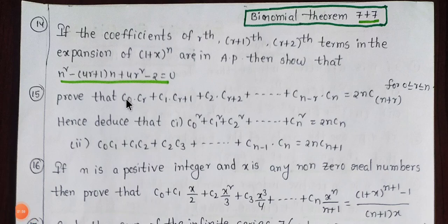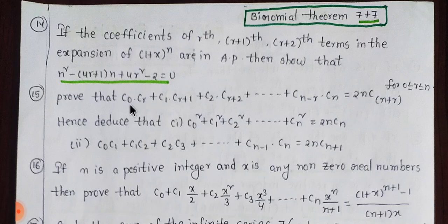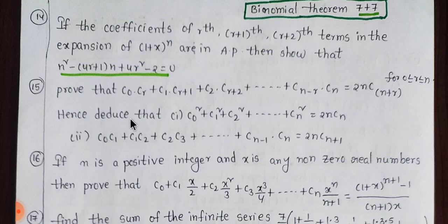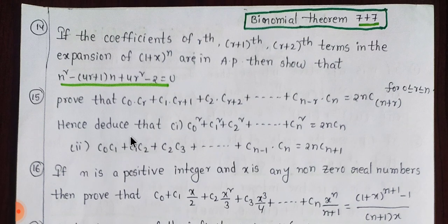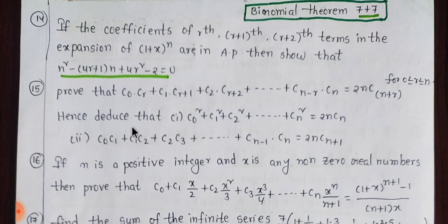The Binomial Theorem is 2 questions of 7 marks. So if you have to do it, you will have to do 2 questions of 7 marks. Now you have to do it. The total of four 7-mark chapters — in these four chapters, you have to complete them.